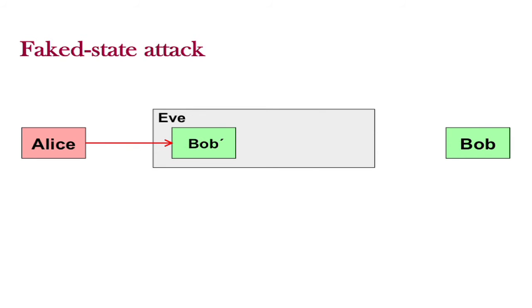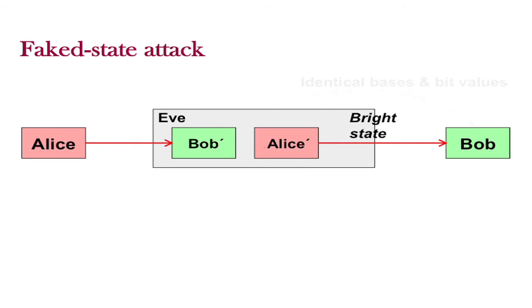We simulate an attack of Eve, in which she measures all quantum signals and resends bright pulses timed after Bob's gates. We found that the attack renders the quantum cryptosystem insecure for a large parameter range. We are in contact with the manufacturer ID Quantique and believe that our work is vital for the practical security of QKD. Our team currently works on other attacks on the Clavis2 device, so we'll be back.